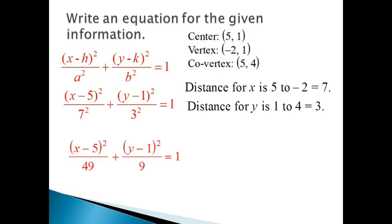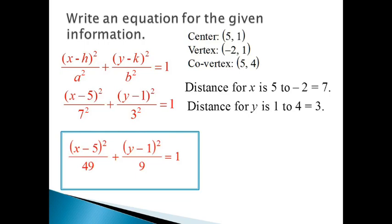This gives us our equation. Notice 7 is a, so the major axis is 14 units long because it's 2a. The minor axis is 6 units long because that's 2b.